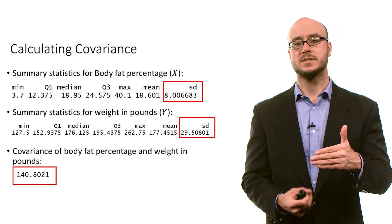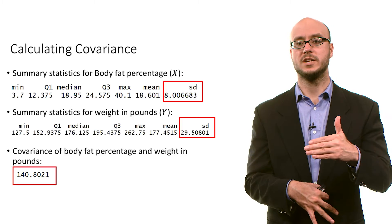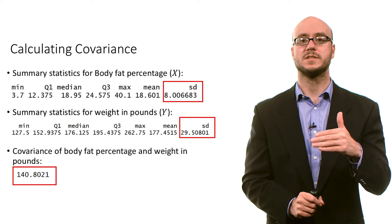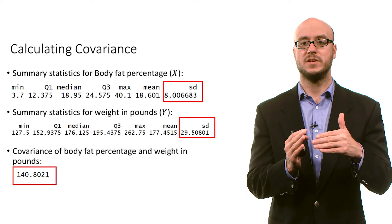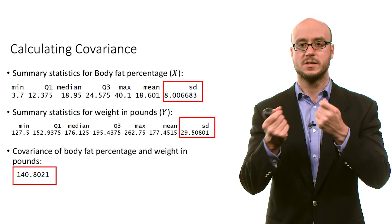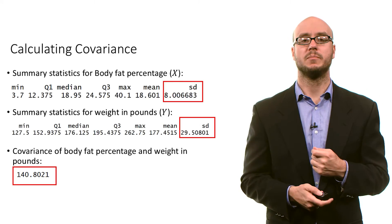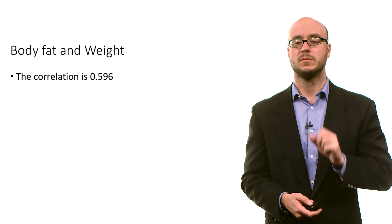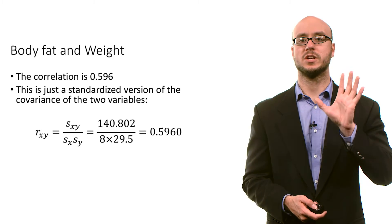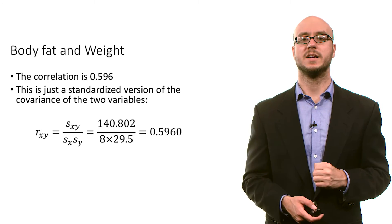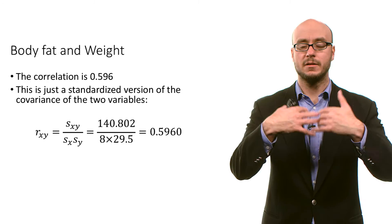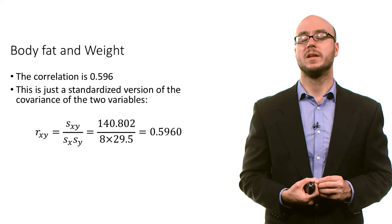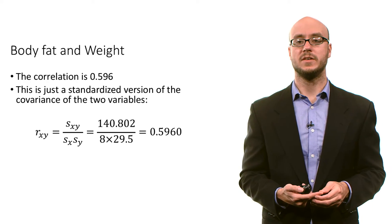So you divide the covariance by the product of these two standard deviations. The units of body fat percentage and weight in pounds will cancel out, and by dividing by the standard deviations, we're going to have this bounding between negative one and positive one inclusive for correlation. The result of these calculations is a correlation coefficient of 0.596. All we're doing is taking the covariance and standardizing it by dividing by the product of these two standard deviations.